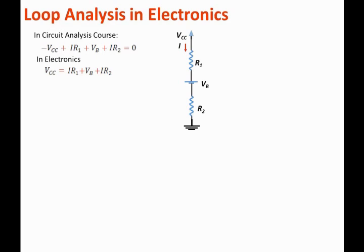We can now solve for I, which is Vcc minus Vb divided by R1 plus R2. We moved Vb to the other side and combined the two resistors. This concept is very important: the voltage at the top equals the sum of the voltages below it — that is essentially KVL. Make sure you visualize and master this technique.